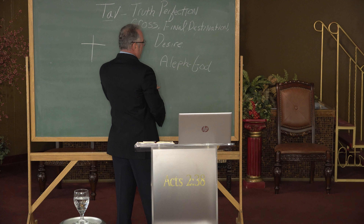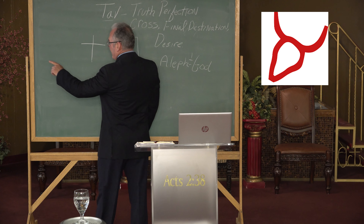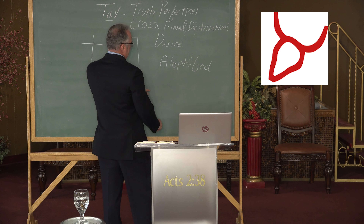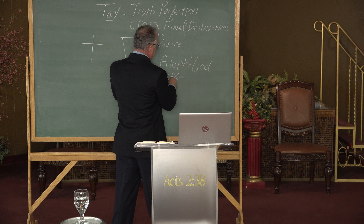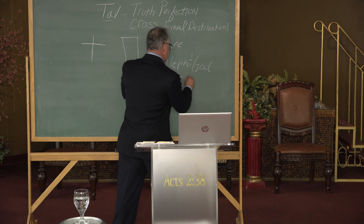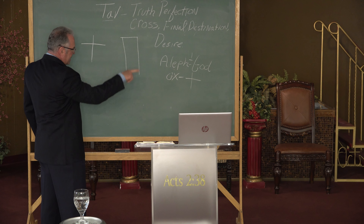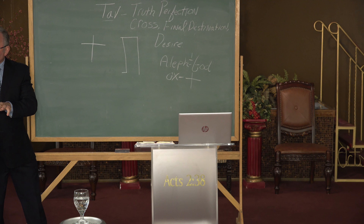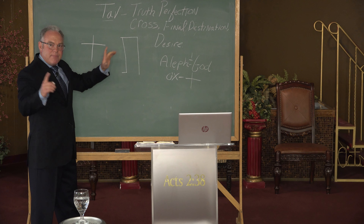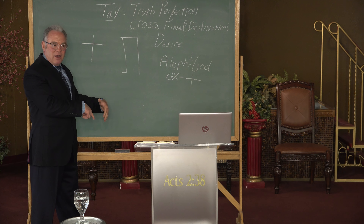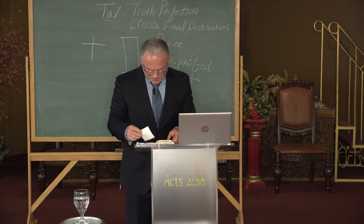What does the Aleph speak of? It speaks of God — the first letter of the Hebrew alphabet, the absolute oneness of God. The Aleph's ancient pictograph is in the form of the head of a bullock, showing that He is our one God but He will come as a sacrifice on the cross. So we have the Tav — truth and perfection, the cross, final destination, desire — but it's a cycle that takes us back to God. The Tav explains how we get back to God, because we can't save ourselves.